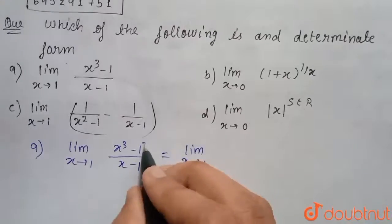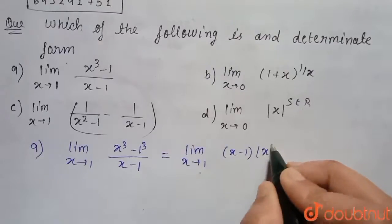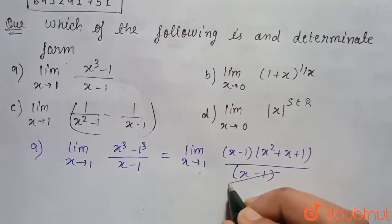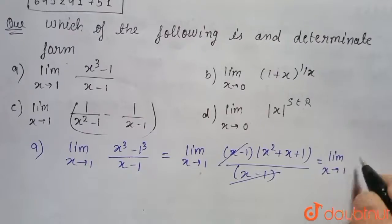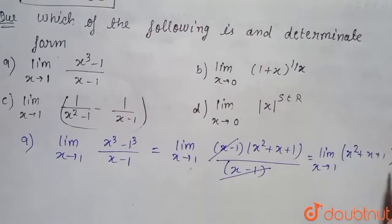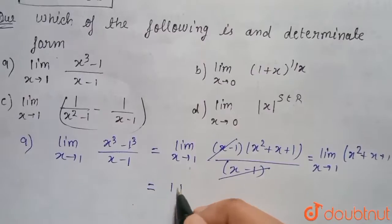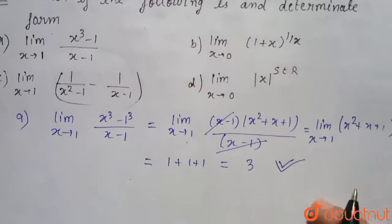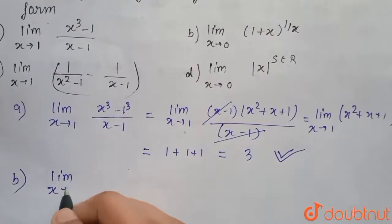We open the formula for x³ - 1, which factors as (x - 1)(x² + x + 1) upon (x - 1). We cancel (x - 1), giving the limit as x tends to 1 of x² + x + 1. Putting x = 1, we get 1 + 1 + 1 = 3. This is a determinate form.